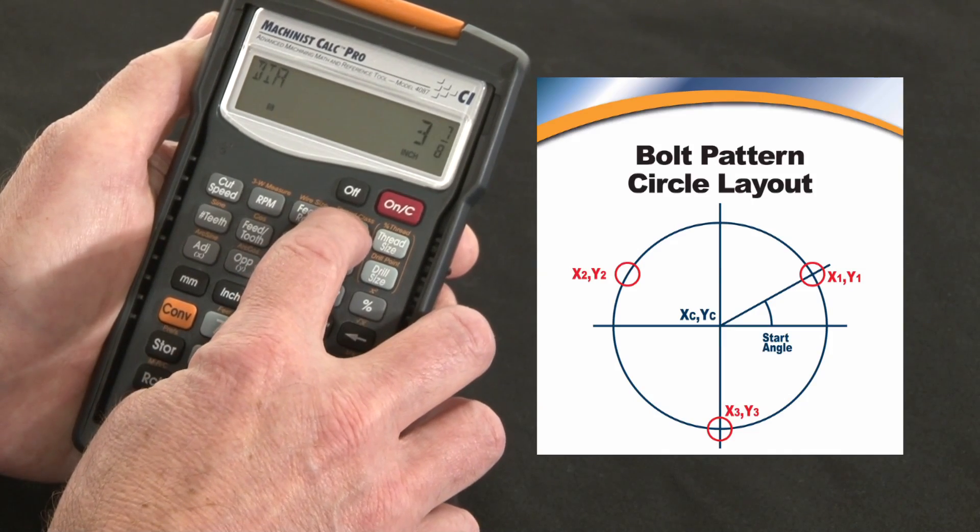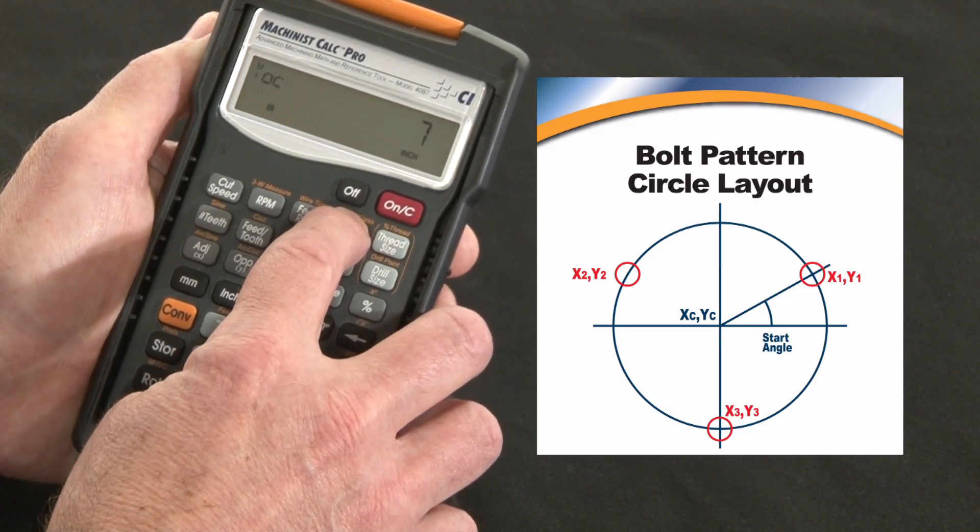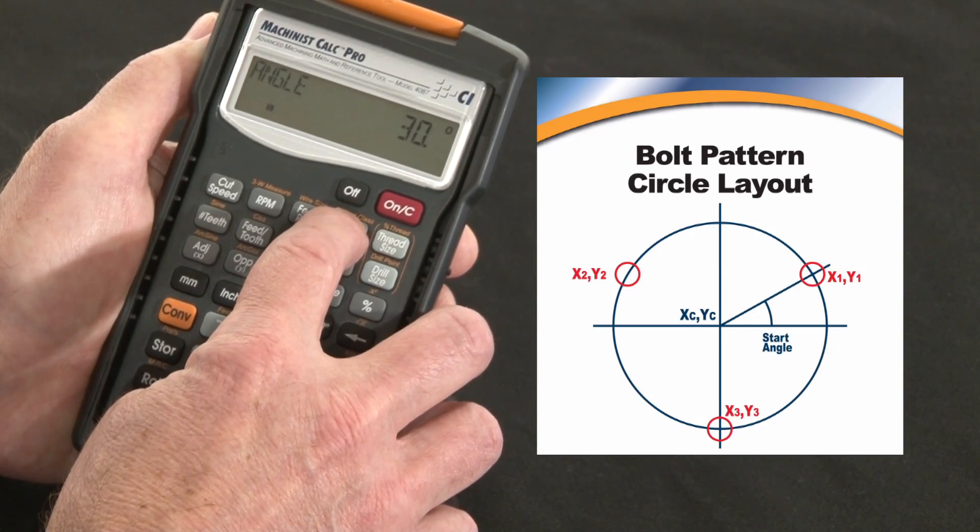And it'll again remind me of the 3 7/8 inch diameter circle, and the XY offsets there, and the angular rotation.